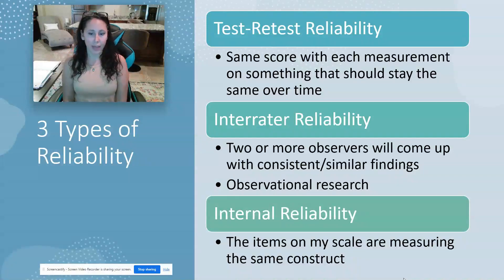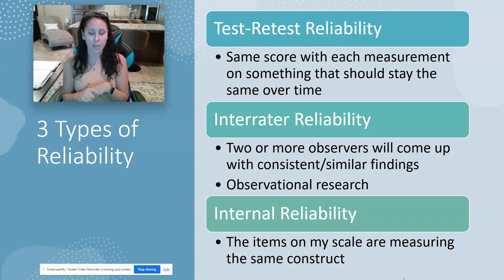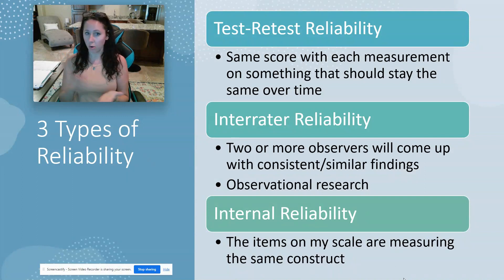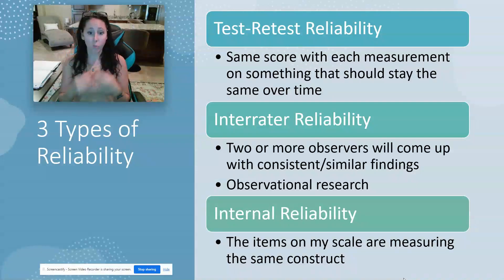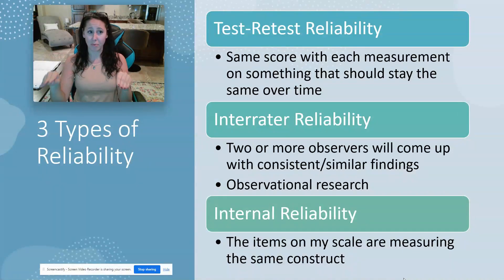The next kind is inter-rater reliability, which is normally relevant to observational research. This is where if I have two or more observers, they're going to come up with consistent or similar findings. For example, if we were observing someone's happiness throughout a day — using Ekman's markers of physical portrayals of human emotion — and I have two researchers following you and coding your enjoyment indicators, but one documents 37 outward markers and the other writes down 92, I do not have good inter-rater reliability. My two observers did not come up with consistent findings.